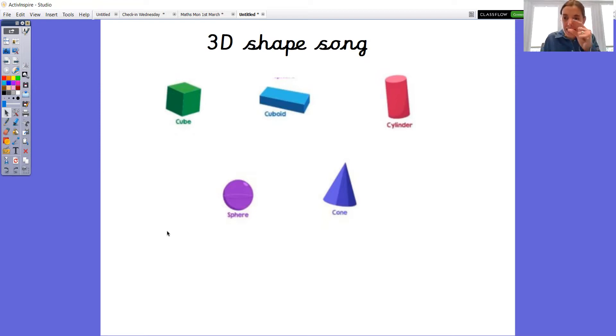Okay. So a little bit of the song goes like this. It's a cube. It's a cuboid. It's a cylinder. As I say the 3D shapes, I want you to point to them. Are we ready? Okay. It's a cube. It's a cuboid. It's a cylinder. Let's do it a bit quicker. It's a cube. It's a cuboid. It's a cylinder. Good.